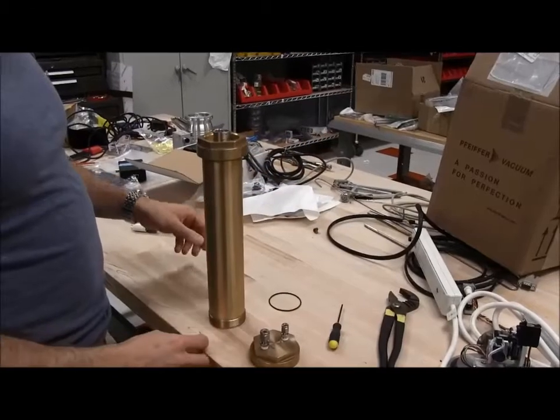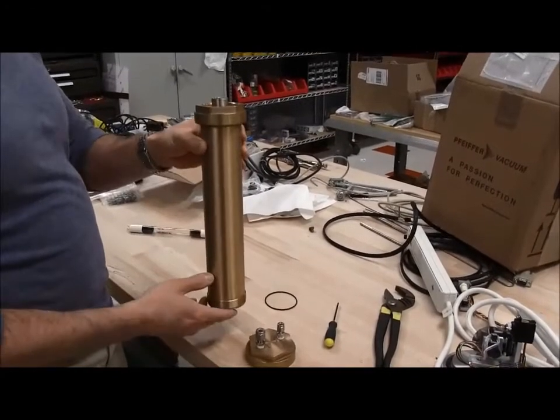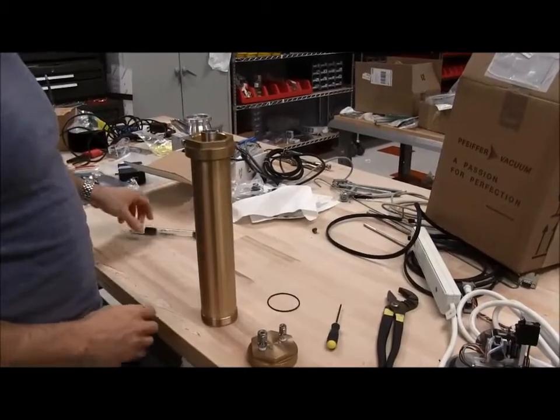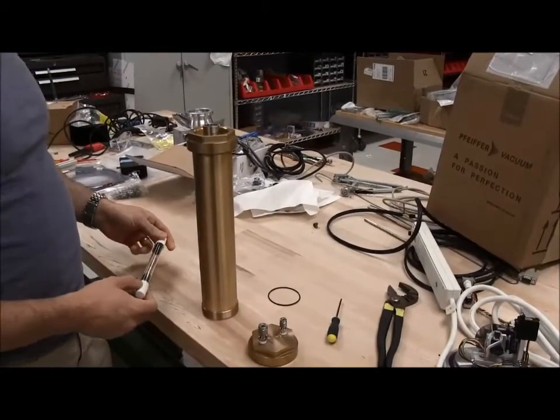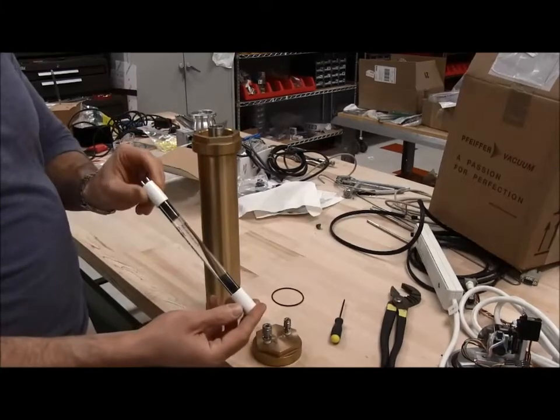So I'm going to demonstrate how to replace the UV lamp inside of the ozone chamber, as part of the clam chamber, and typically when an ozone lamp goes, it'll look like this on the inside.